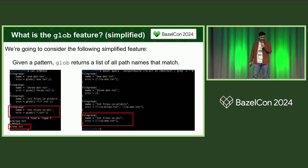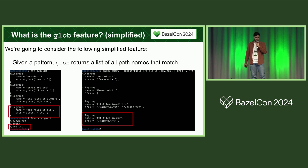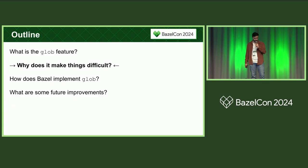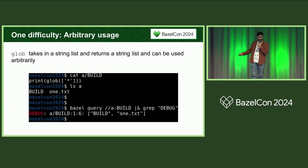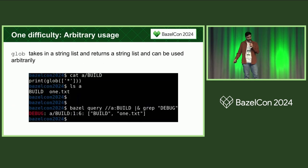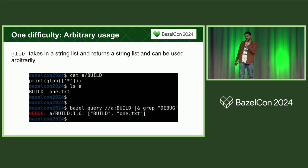Down here, same idea but non-recursive — just all files ending in .txt in the current directory, so just 1.txt. This sounds pretty simple. What's the big deal? One problem is that glob can be used arbitrarily — it's just a function that takes in a string list and returns a string list.